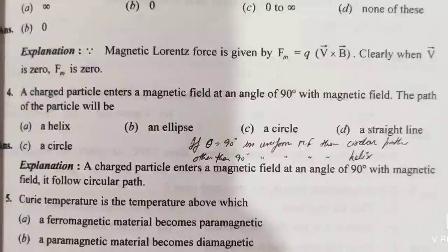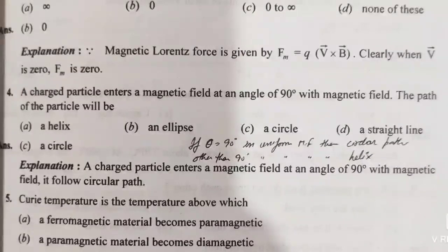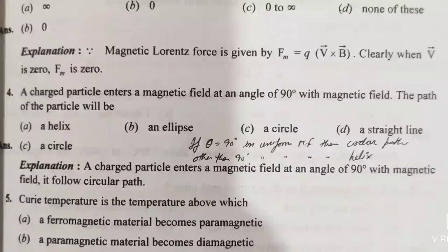Next: a charged particle enters a magnetic field at an angle of 90 degrees with the magnetic field. This is a most important question. If the angle is 90 degrees, the particle follows a circular path. However, if the particle enters at an angle other than 90 degrees, such as 70 or 30 degrees, it will follow a helical path. So at 90 degrees, the path is circular.